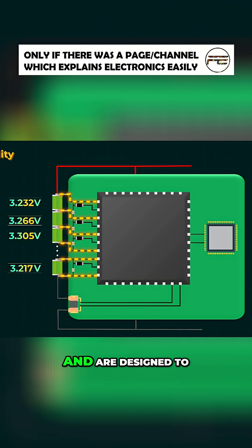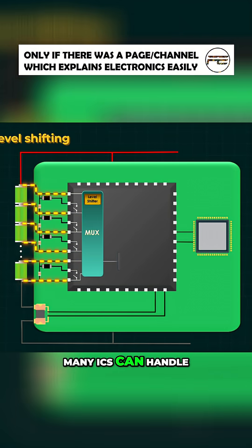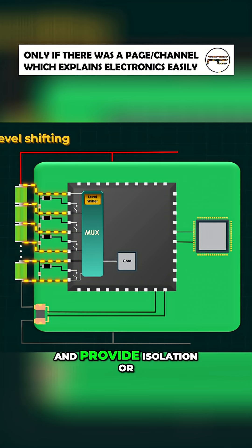They often include self-checks and are designed to give consistent, trustworthy readings over time. Many ICs can handle high common-mode voltages for a multi-cell stack and provide isolation or safe interfacing to the MCU.